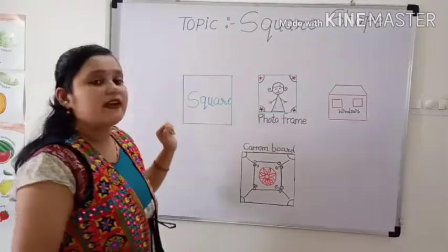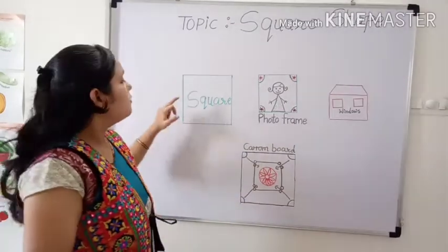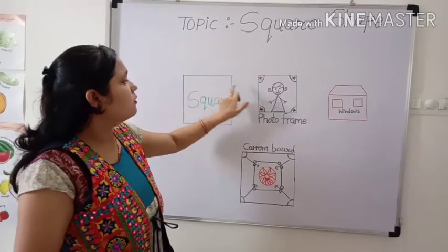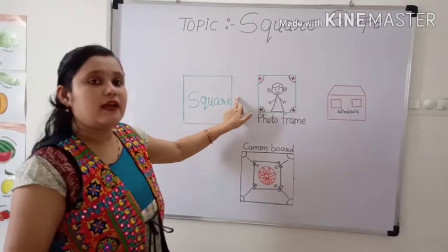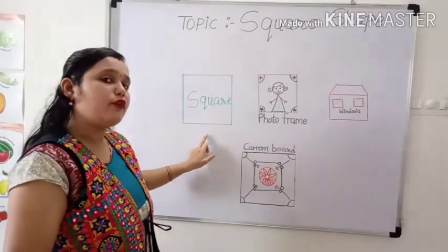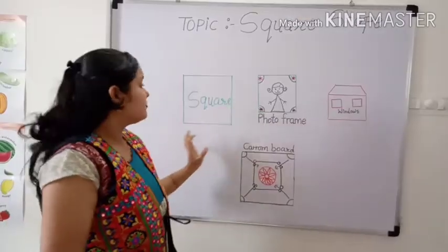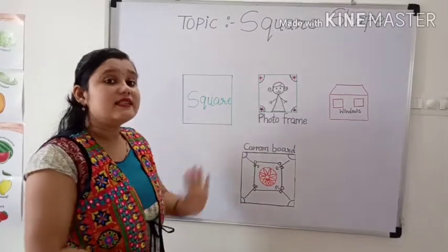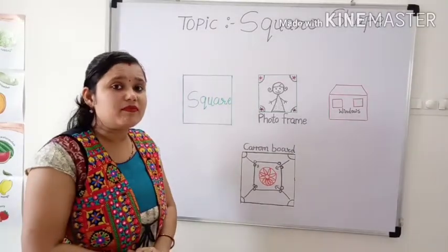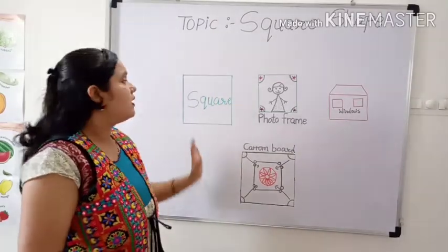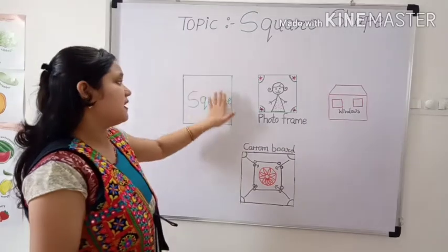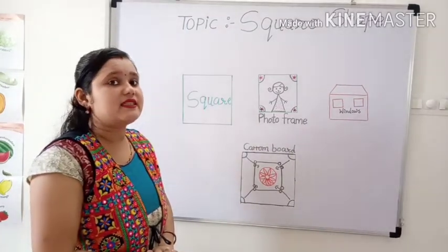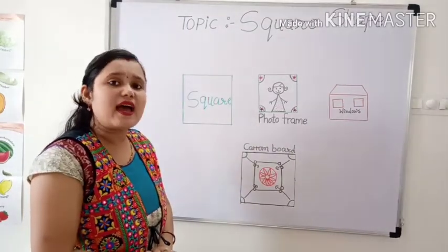Let's recount: one, two, three and four. They all are the same. This is a square shape. Which shape is this? Square.